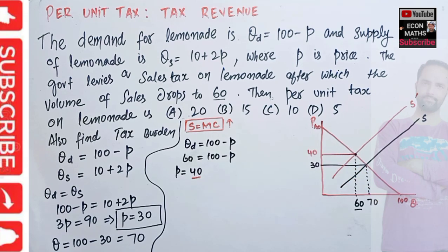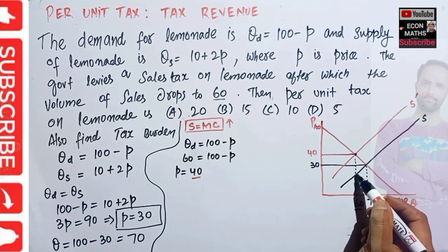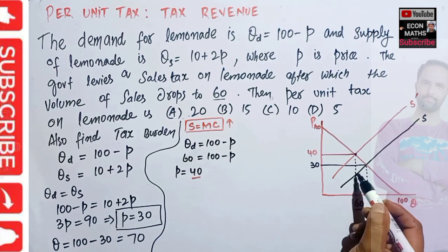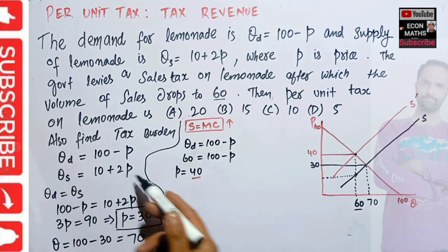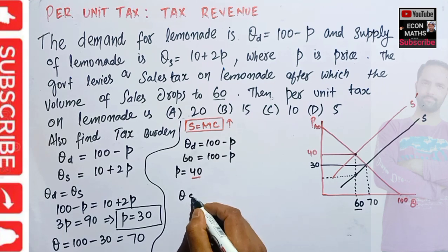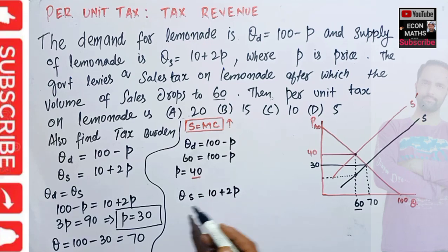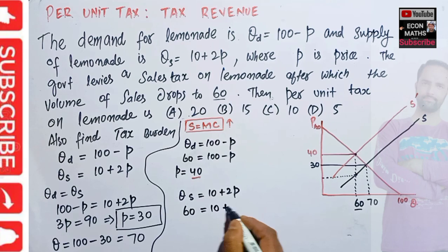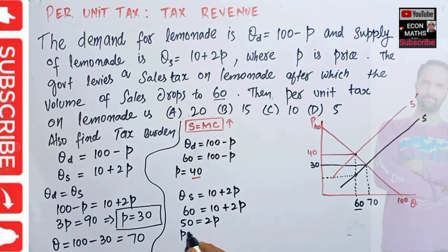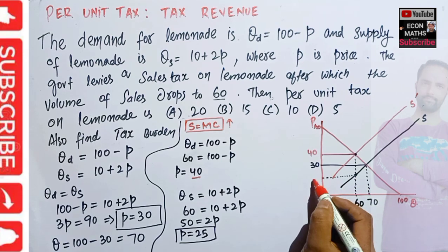Now, what will be the price that sellers will receive? When quantity drops to 60, we solve the original supply function QS = 10 plus 2P. Substituting Q = 60: 60 = 10 plus 2P, so 50 = 2P, which gives P = 25. Therefore, the price that sellers will receive is 25 dollars.